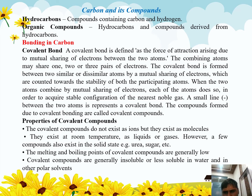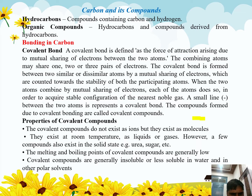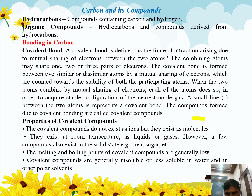A small line between two atoms represents the covalent bond. For example, a carbon-carbon bond is represented by a line between the two carbon atoms. Compounds formed due to covalent bonds are called covalent compounds, meaning all hydrocarbons are covalent compounds. Covalent compounds do not exist as ions but exist as molecules.